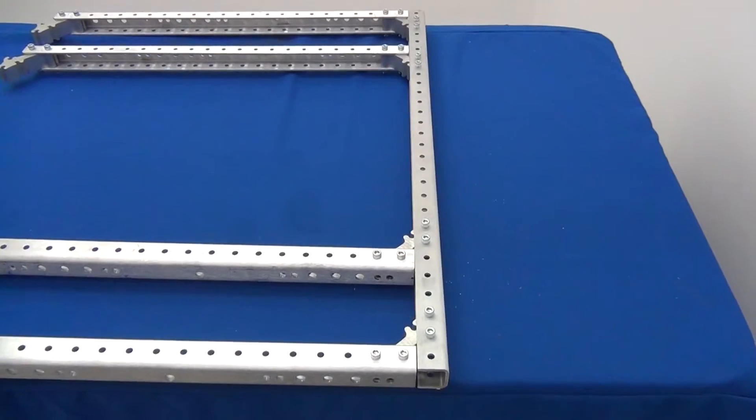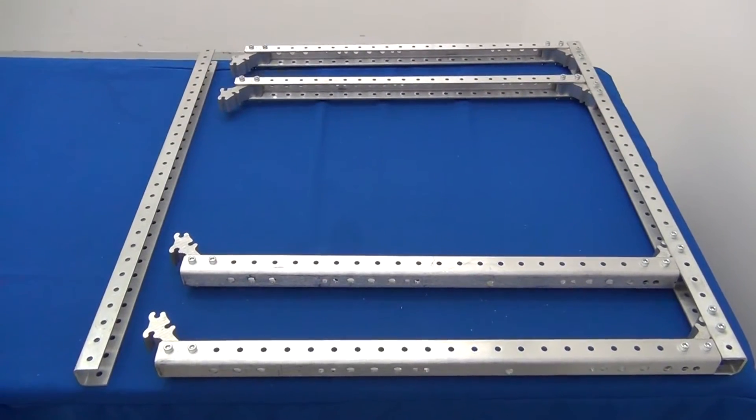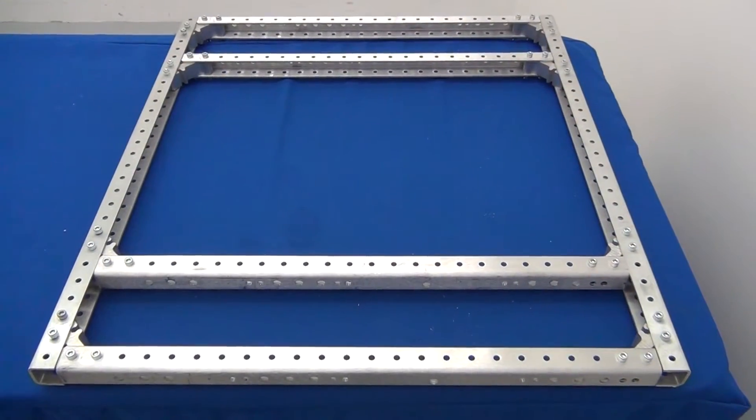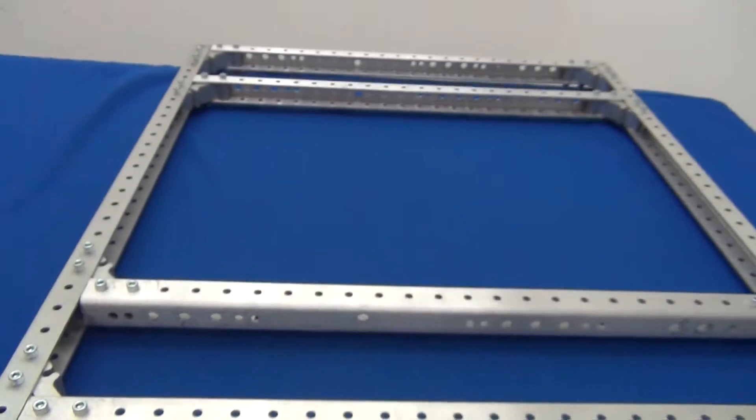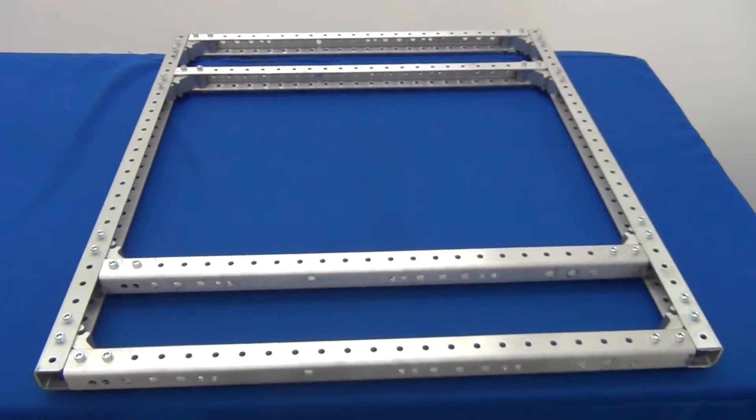Make sure that the C faces in towards the center. Also make sure that the four short pieces are aligned. Add corner connects to the 29 inch piece. The outer corner connects will be flush with the end and the inner corner connects will be three holes away from the outer corner connect.